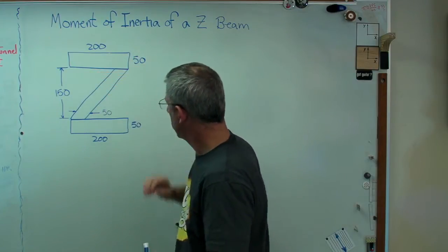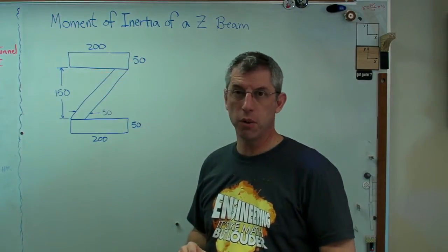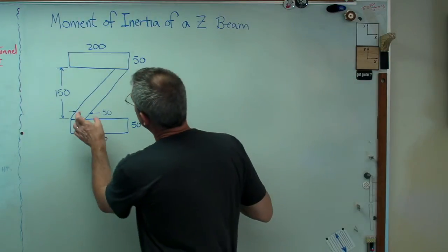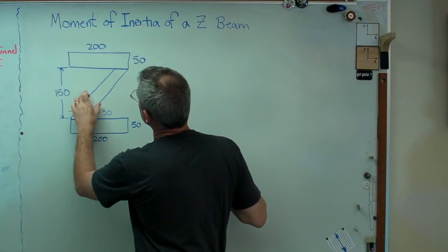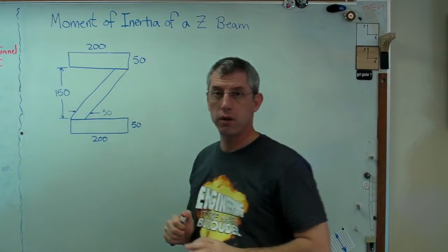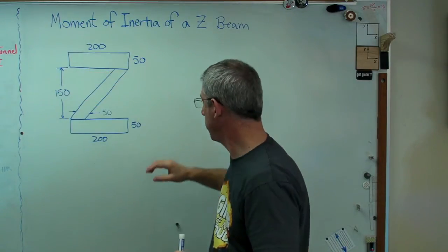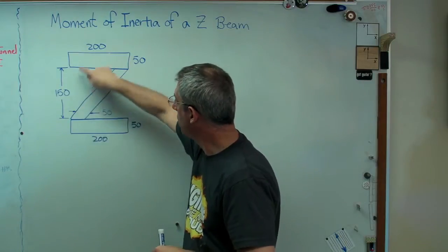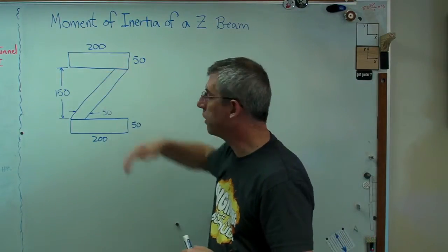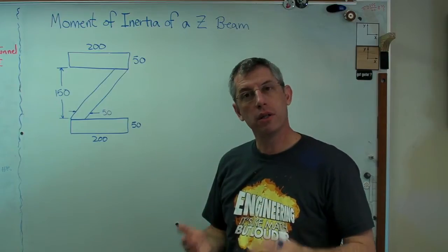Each of the sections here is 50 millimeters wide. Now, it's important to notice that the 50 millimeters is horizontal here. It's not measured perpendicular to the long face of it here. It's horizontal. That makes a difference. And the gap between the top and the bottom of the two caps here is 150 millimeters.